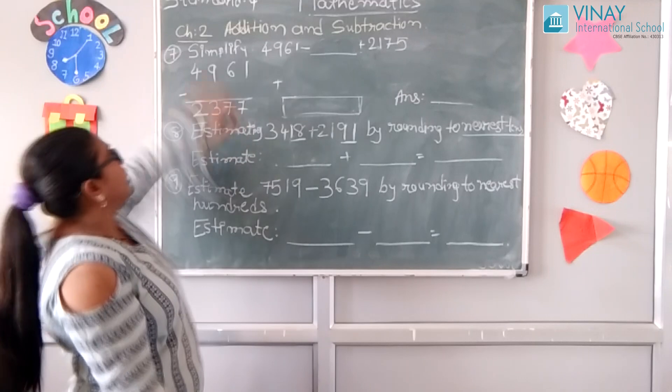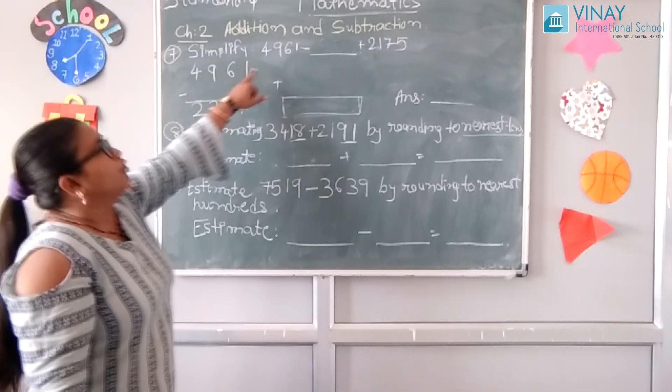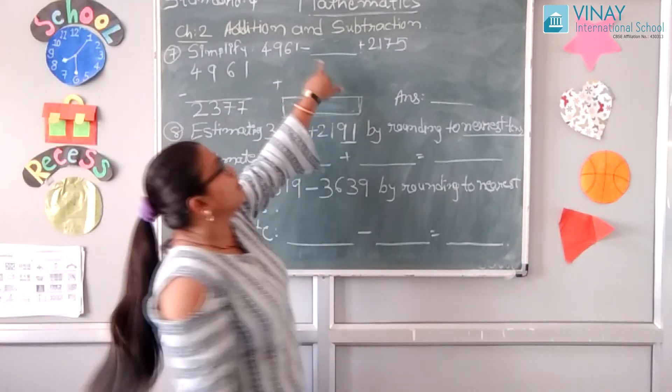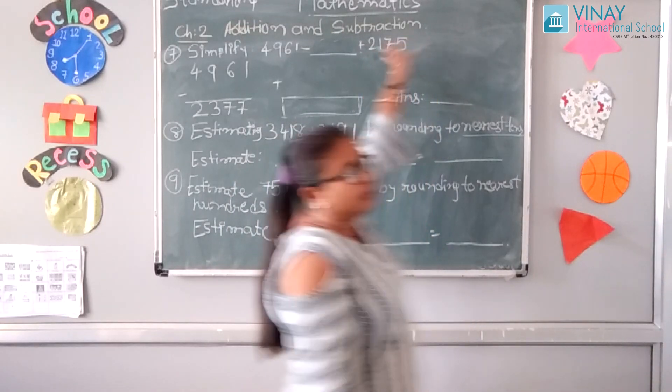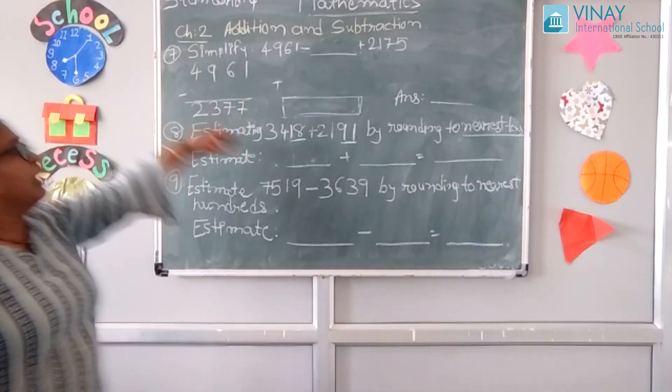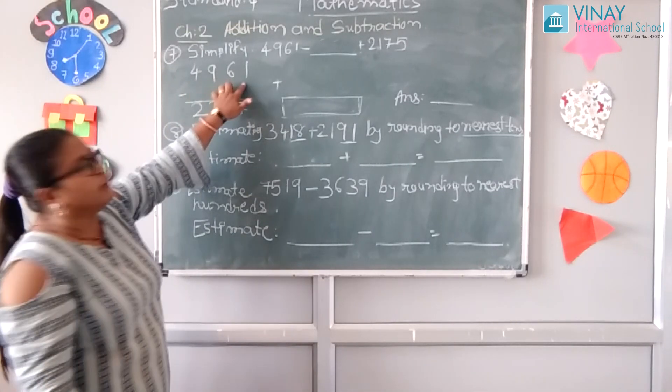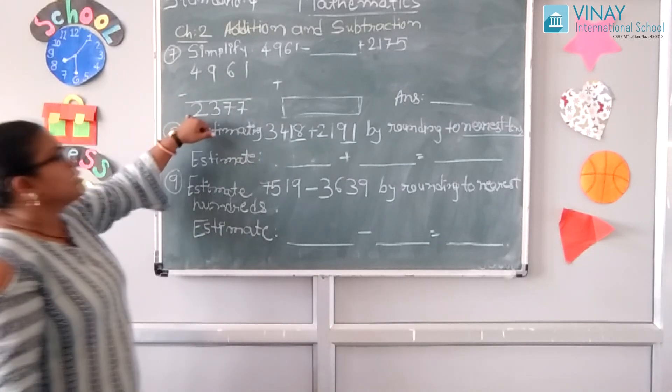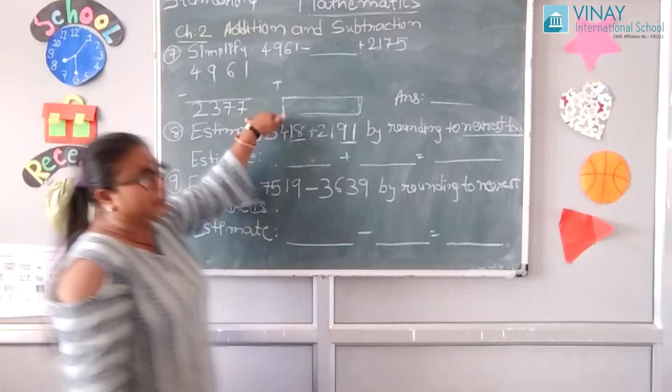Now next question we have is number 7. It is to simplify 4961 minus some number plus 2175. In our textbook, the answer given is 2375. Let's do it.